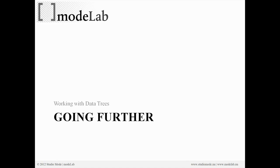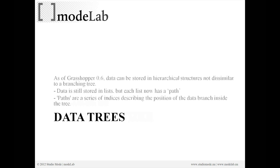Going further, we already started to talk about data trees, and that's really the next step. As of Grasshopper 0.6, data can now be stored in hierarchical structures that are not dissimilar to a branching tree. Data is still stored in lists, but each list now has a path.